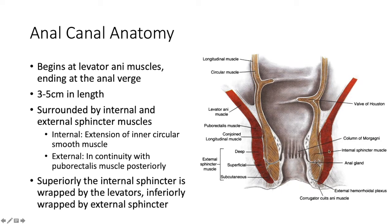Externally, the external sphincter at its superior-most aspect is really an extension of the puborectalis muscle and of the levator ani muscles. Superiorly, the internal sphincter is wrapped by the levators themselves. Inferiorly, it's going to be wrapped by the external sphincter.